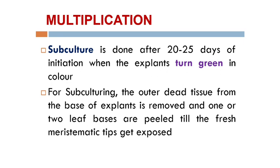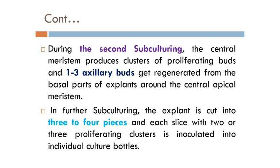Subculture is done after 20 to 25 days of initiation when the explants turn green in color — the yellowish-white color changes to green. During subculturing, the outer dead tissues from the base of the explant are removed and one or two leaf basals are peeled until fresh meristematic tips get exposed. During the second subculturing process, the central meristematic region produces clusters of proliferating buds. Approximately 1 to 3 axillary buds may be regenerated from the basal part of the explant. The explant is then cut into 3 to 4 pieces, and each slice with 2 or 3 proliferating clusters is inoculated into individual culture bottles.